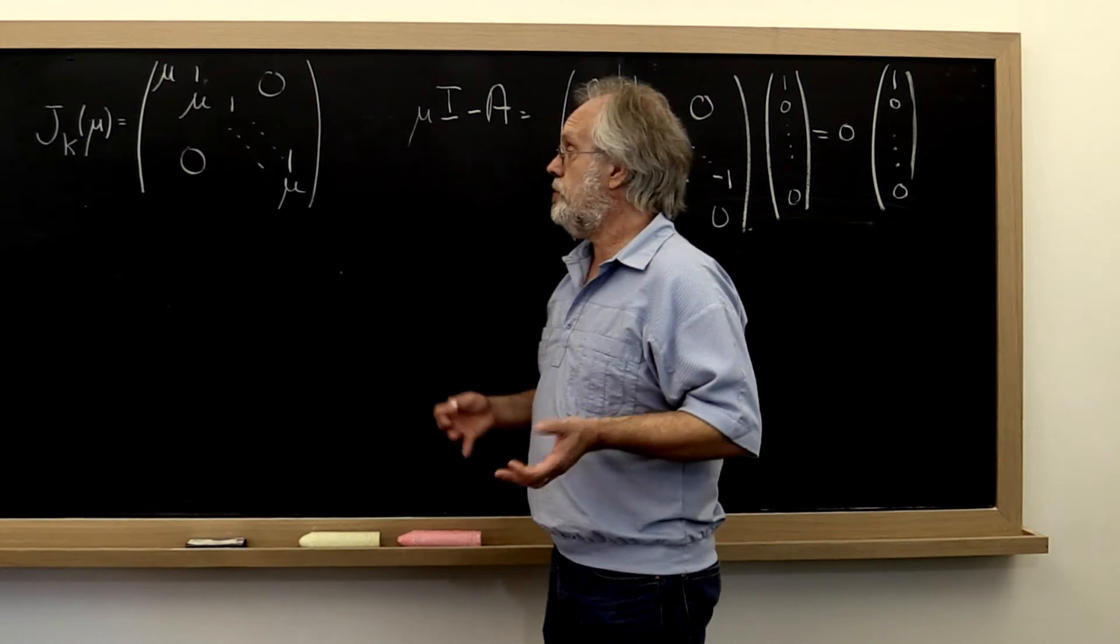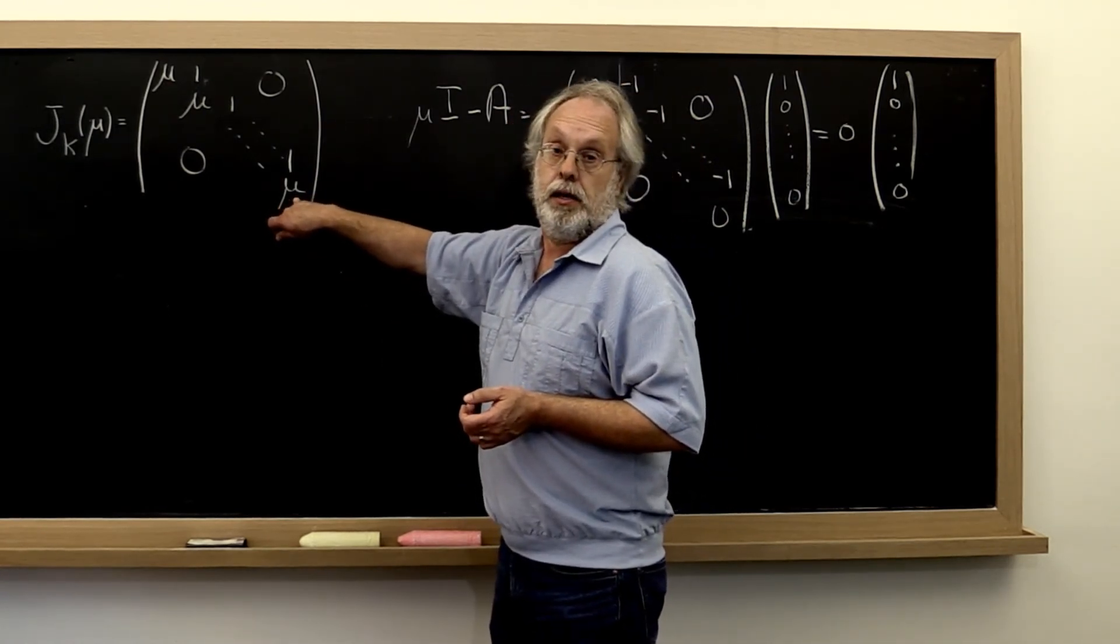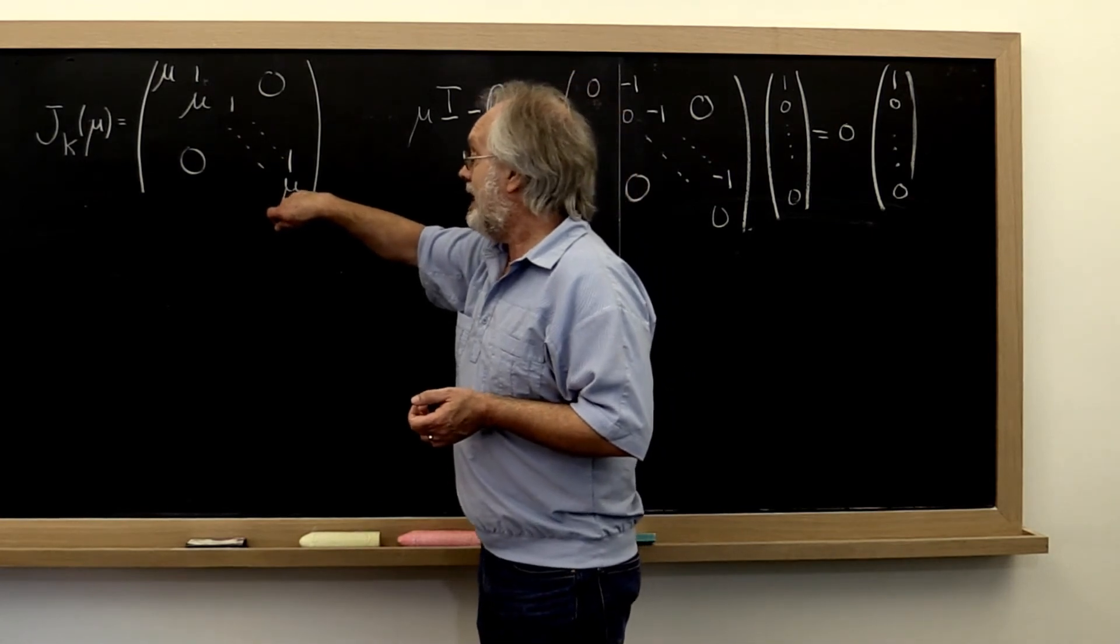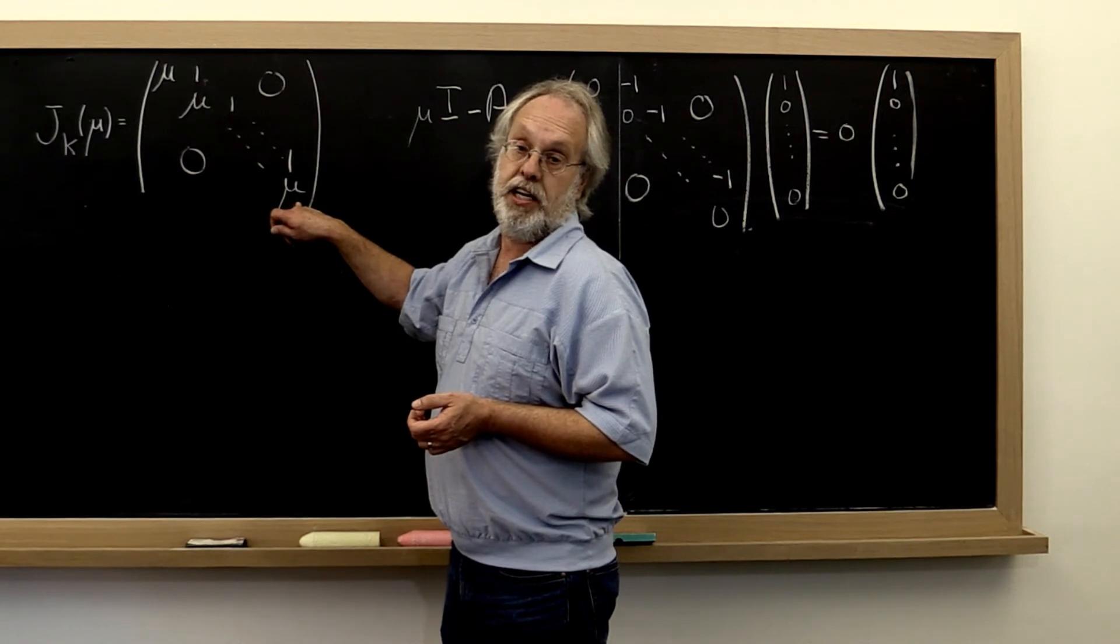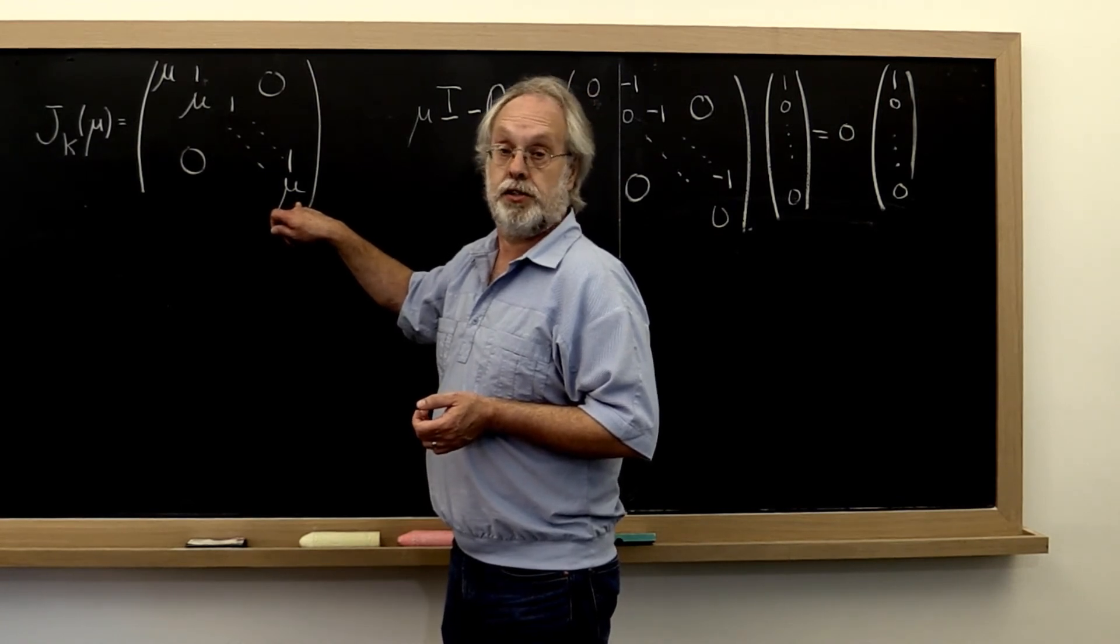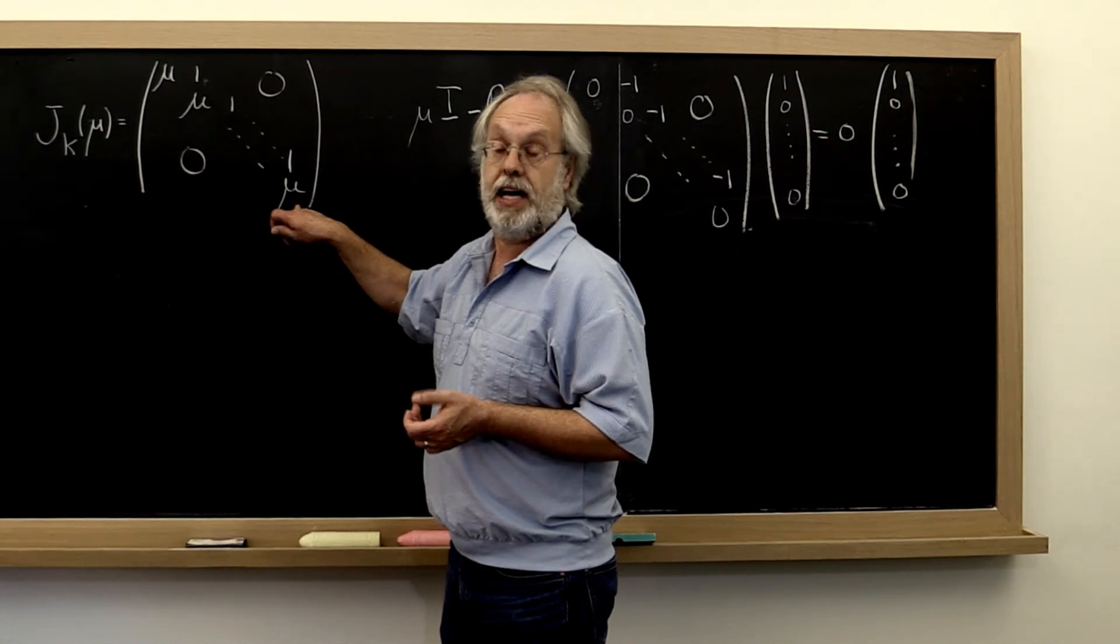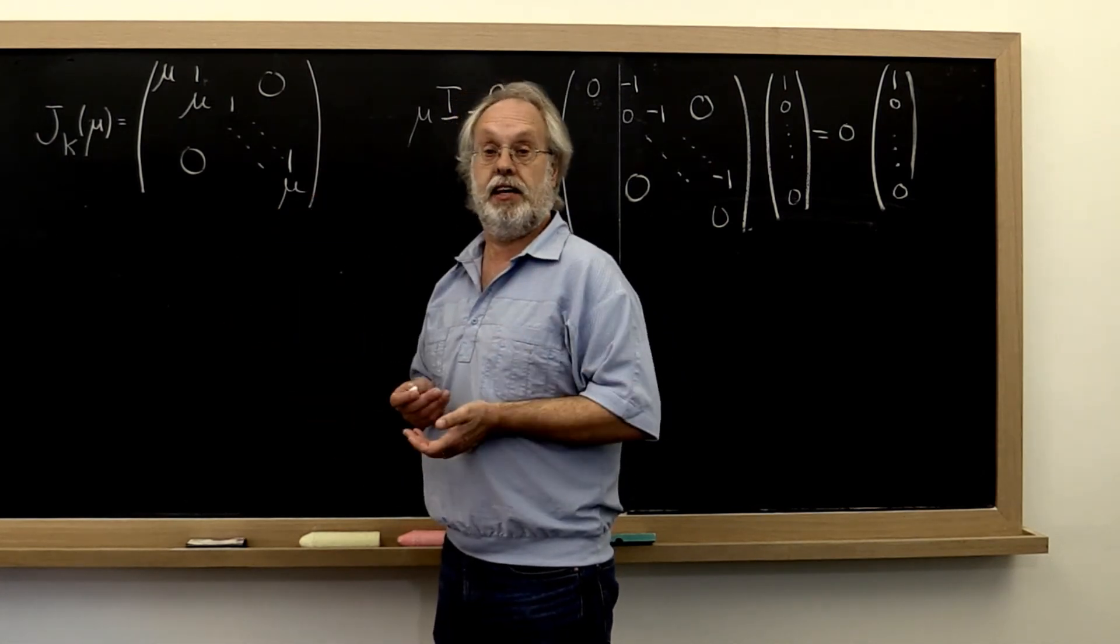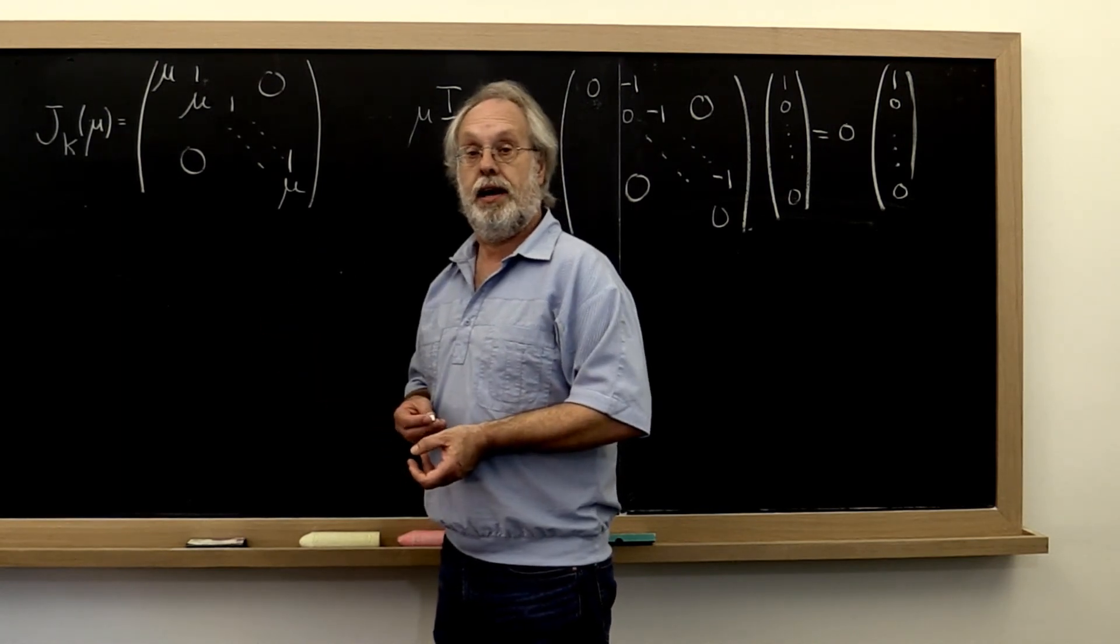So what we deduce is that a Jordan block like this has an eigenvalue of multiplicity k, but it only has one eigenvector associated with it. As a result, it can't be diagonalized because we cannot find k linearly independent eigenvectors.